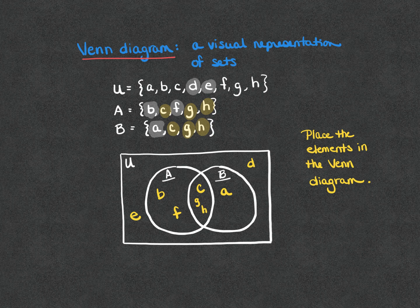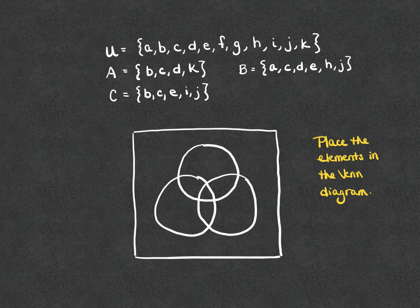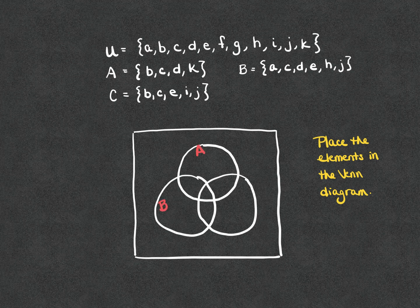Now, we don't have to limit ourselves to two subsets. In this next example, I have three different subsets of a universal set U. Notice I've expanded U a little bit to include a few more letters. Let's go ahead and label our subsets A, B, and C — it doesn't matter which one is which. We're going to go through and place our elements where they belong, going in alphabetical order A through K.